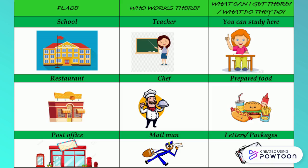To start, we're going to see the community helpers — some of them that we have in our community. In the first column you're going to see the place, in the second column who works there, and in the third column what can I get there or what do they do there, so we have some examples there.